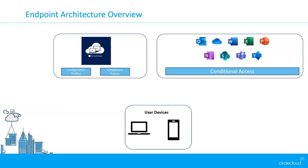What we've got now is just a very basic sort of architecture where we've got user devices, and those user devices are going to be accessing Office 365 and associated products, potentially using conditional access. We're going to touch on where configuration profiles and compliance policies fit into this architecture and how they impact conditional access.